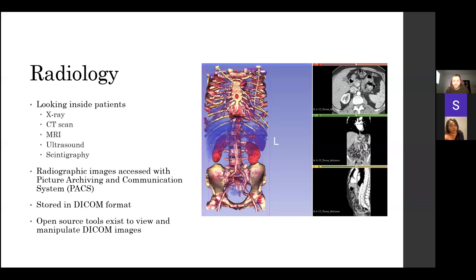I have only ever received data with all identifying information in place and then had to scrub it afterward. This hasn't been a huge issue for me because the other data I've requested also required patient identifiers, so there were no further privacy difficulties. Radiographic images within the hospital are typically accessed using what's called a picture archiving and communication system, or PACS. Radiologists use this to make their diagnoses, and other providers use it to access images in a clinical setting.